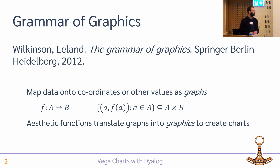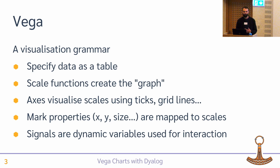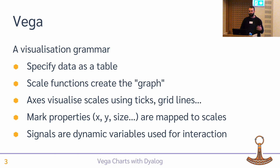That's the basic idea — getting building blocks you can compose together to create a wide range of charts. Vega is one of a number of software packages that implement some kind of visualization grammar based on this idea. You specify your data as a table, use scale functions to do the mapping, set properties of axes to visualize the scales, and set properties of the marks.